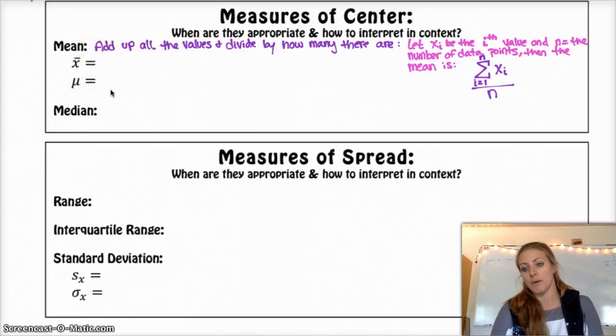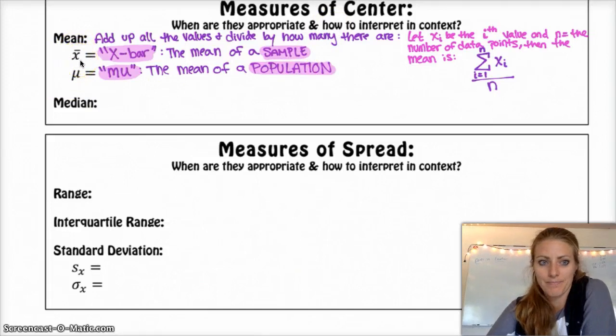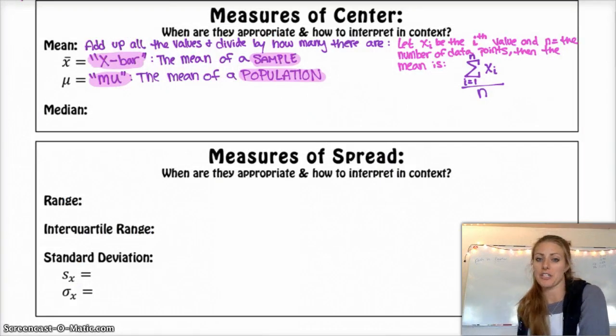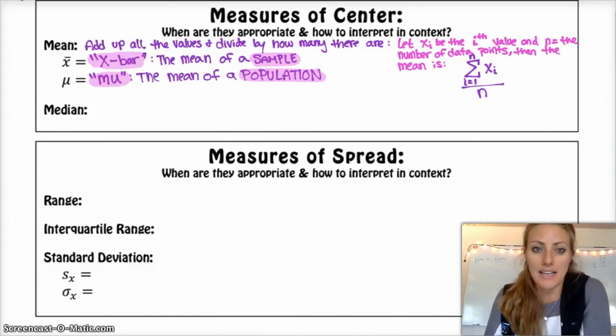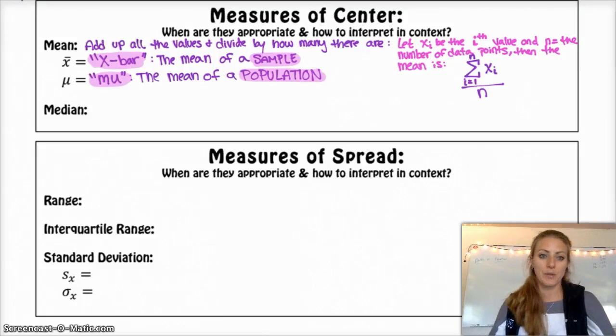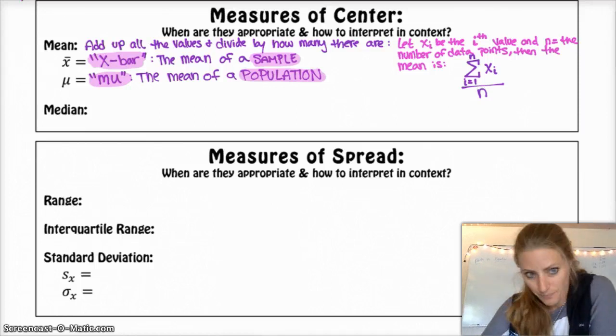These two symbols here, this one's called X bar, and this one is called mu. Both of them represent the mean. But one is for a sample, and one is for a population. Usually if we use Greek letters, we're talking about population. And if we use a symbol like this, or English letters, with some symbols or whatever, we're usually talking about from a sample.